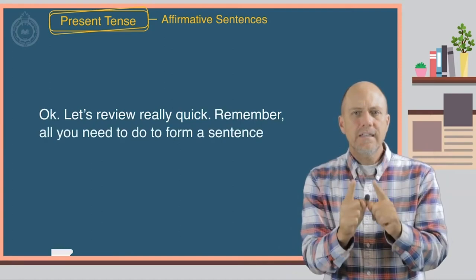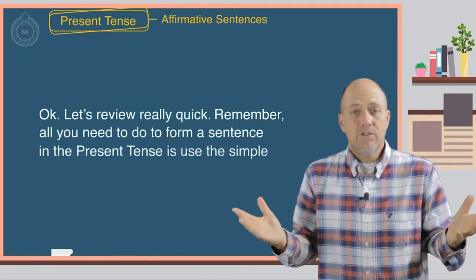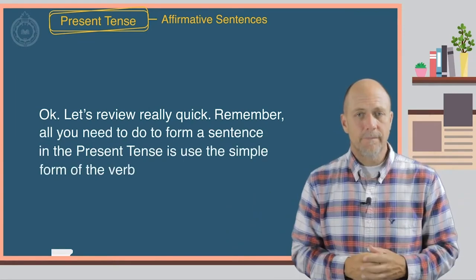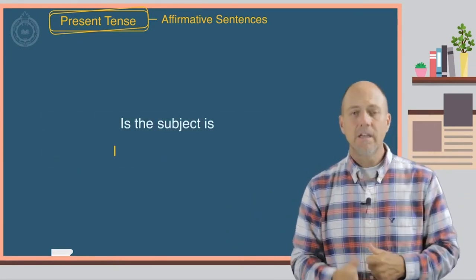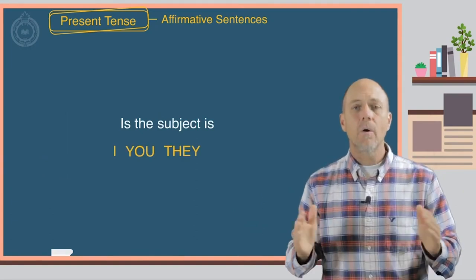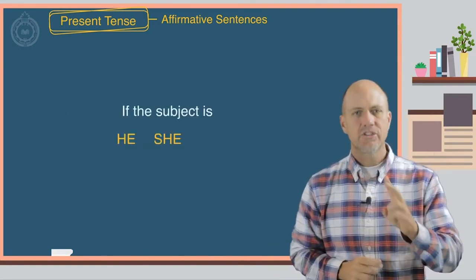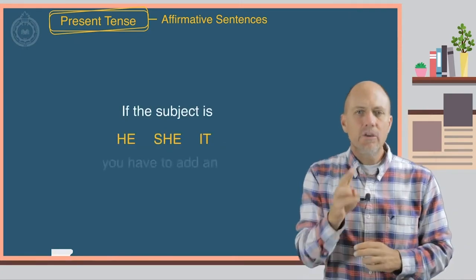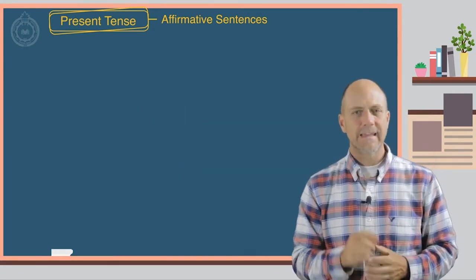Remember, all you need to do to form a sentence in the present tense is use the simple form of the verb. If the subject is he, she, or it, you have to add an S to the end of the verb.